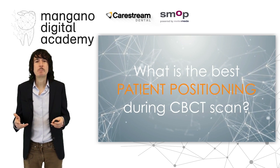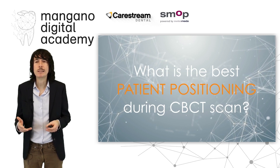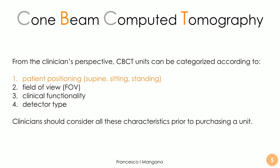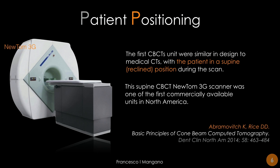What is the best patient positioning during the CBCT scan, according to the literature and from the clinician's perspective? CBCT units can be categorized according to field of view, functionality, and detector type. All these characteristics are important, but patient positioning is also quite important, because the patient can stay supine, can sit, or can be standing during the CT scan. At the very beginning, with the first CBCTs, the patient was usually in a supine reclined position, because the first CBCTs looked like medical CTs. This is an example of one of the first CBCTs available in North America about 20 years ago.